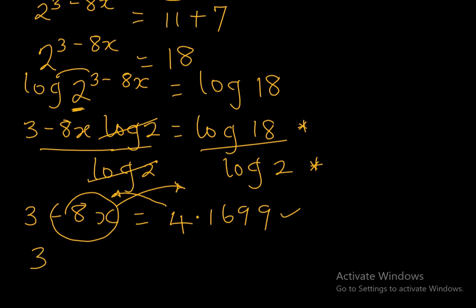So we have 3 minus 4.1699 equal to 8x, as the terms cross the equal sign and change signs.